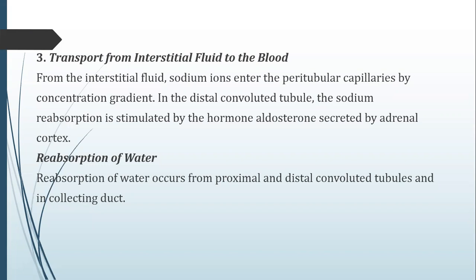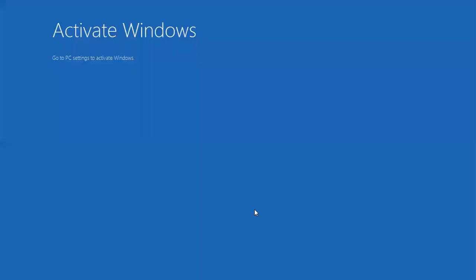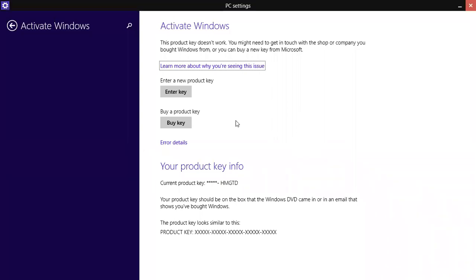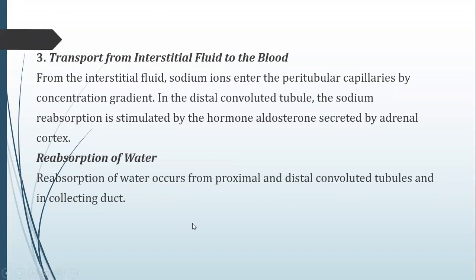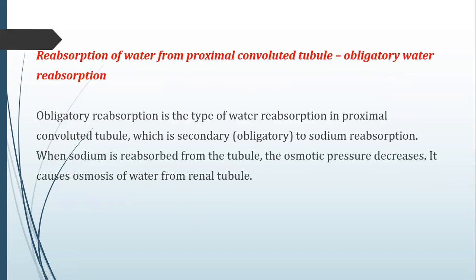Next is reabsorption of water. Whenever there is reabsorption of sodium, reabsorption of water also occurs with it. Reabsorption of water occurs from the proximal convoluted tubule, distal convoluted tubule, and collecting duct. The first is reabsorption of water from the proximal convoluted tubule, which is obligatory water reabsorption — it is secondary to the reabsorption of sodium. Water is reabsorbed because of sodium, which is why it is called obligatory reabsorption.